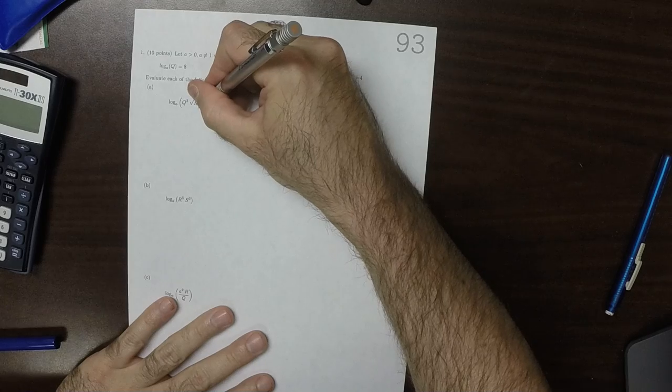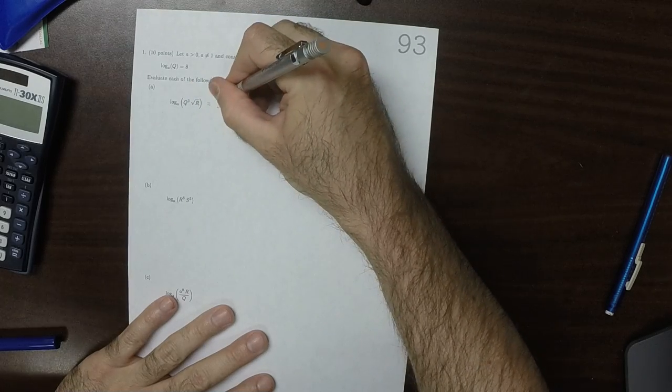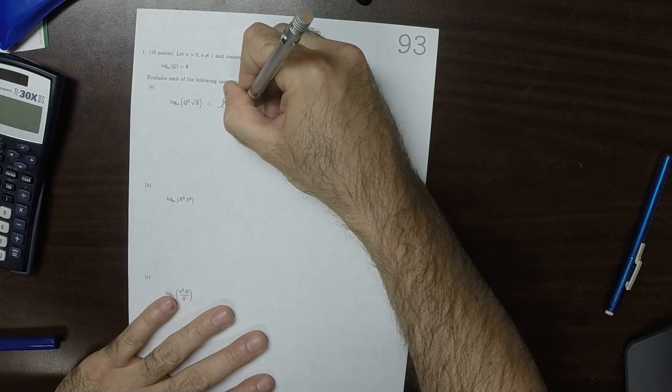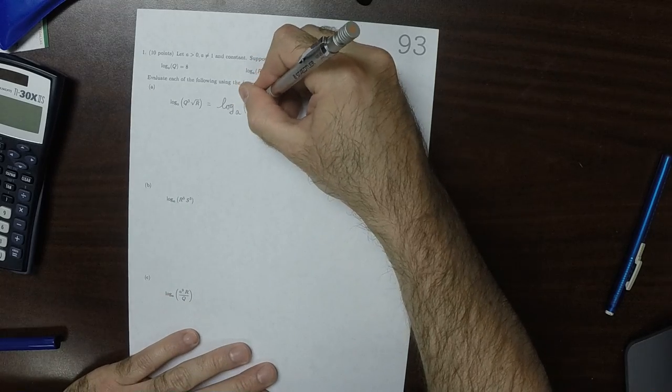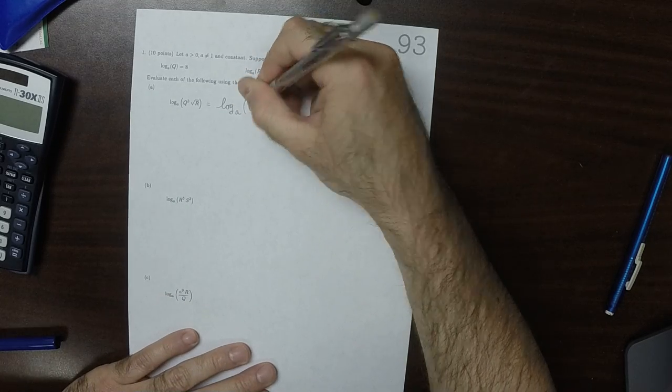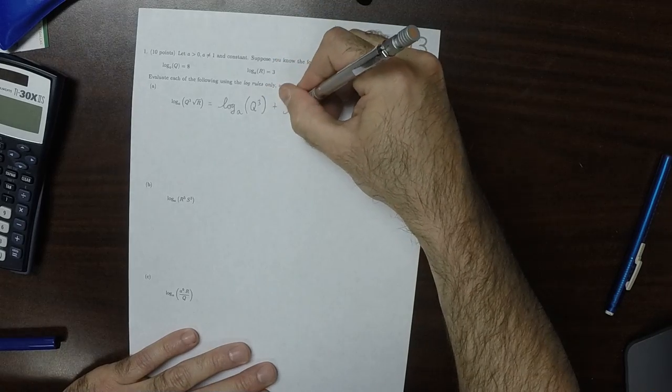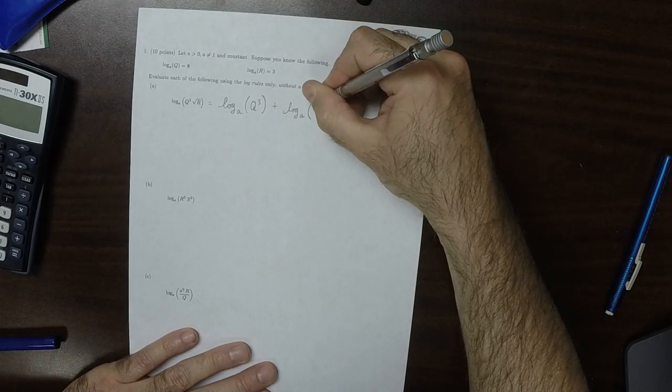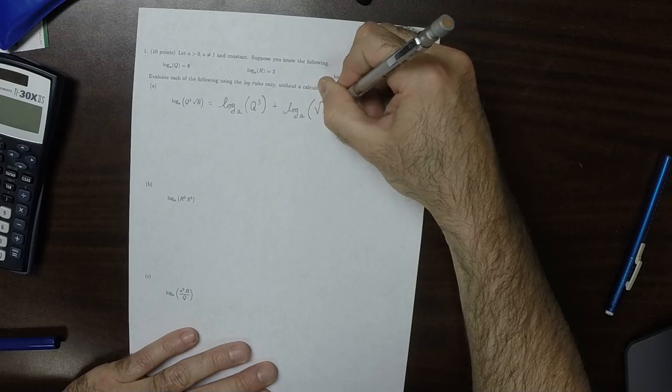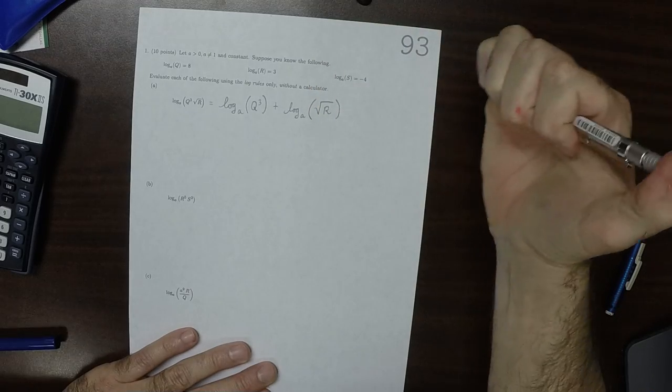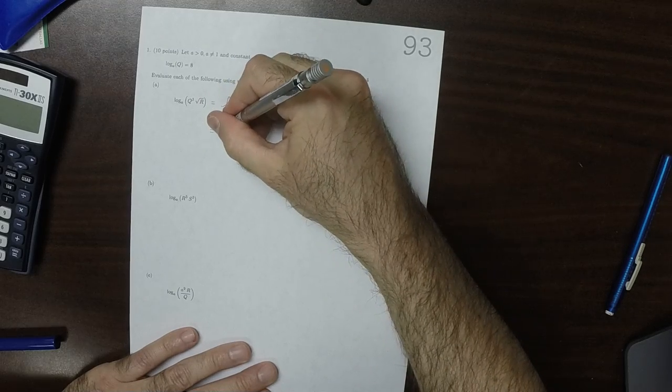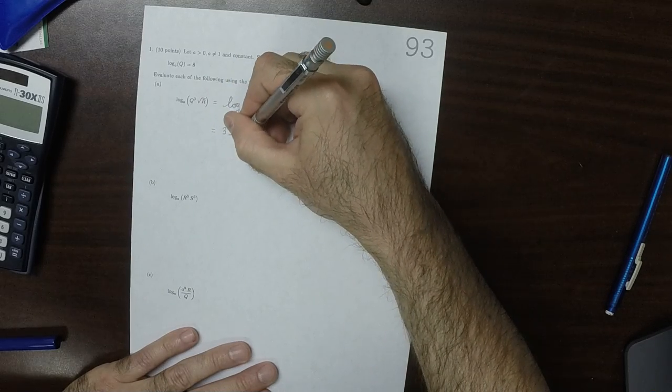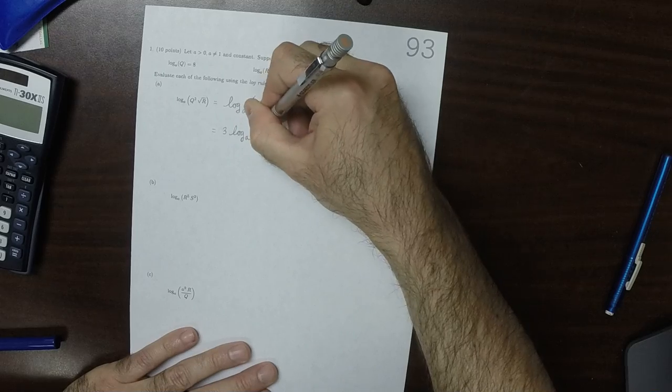So this is log base a of q cubed plus log base a of square root r, so then that is 3 log base a of q.